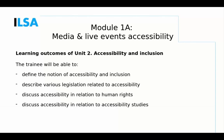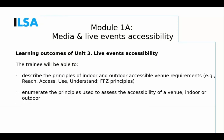Moving to Unit 3, called Live Events Accessibility: after reading and visiting the materials of this unit, students will be able to describe the principles of indoor and outdoor accessible venue requirements. For example, they should know that a venue should be easy to reach, to access, to use, and to understand. They should also be familiar with the FFZ principles, and be able to enumerate the principles used to evaluate the accessibility of a venue, be it indoor or outdoor.